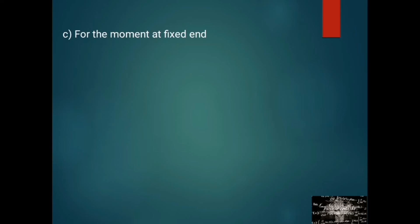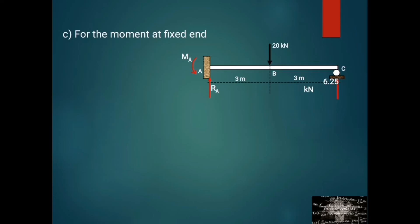For letter C, the moment at the fixed end: returning to the actual beam, using ΣMA = 0 (counterclockwise positive): MA + 6.25(6) − 20(3) = 0, so the moment at A = 22.5 kN·m.